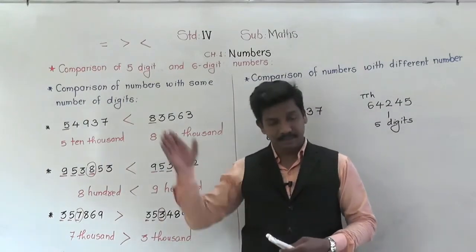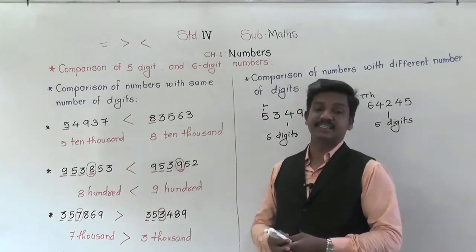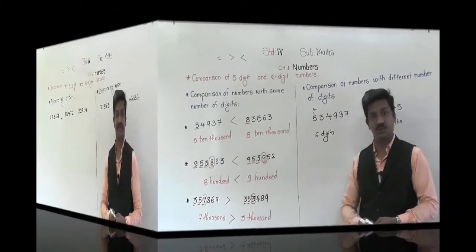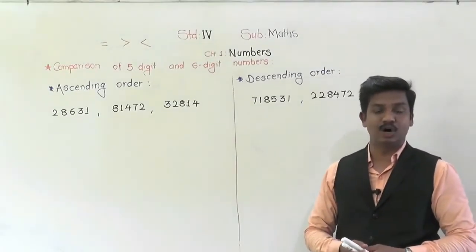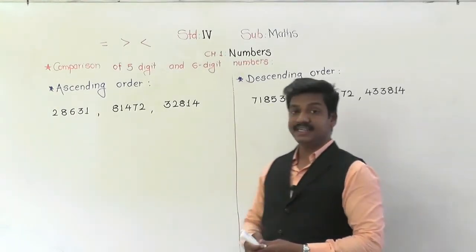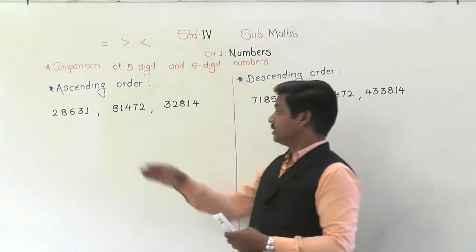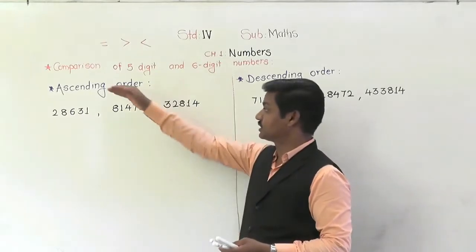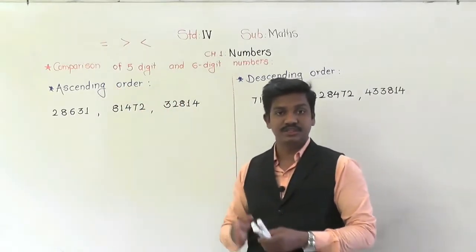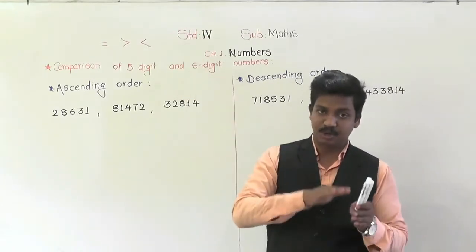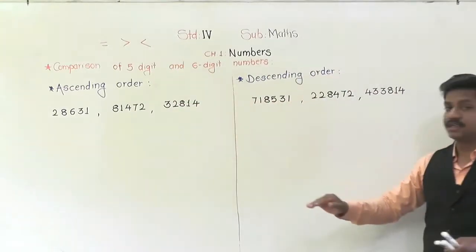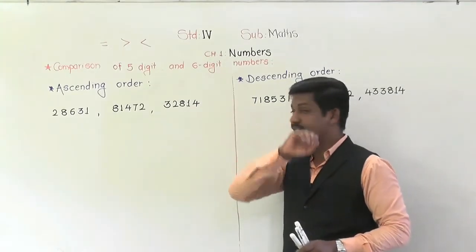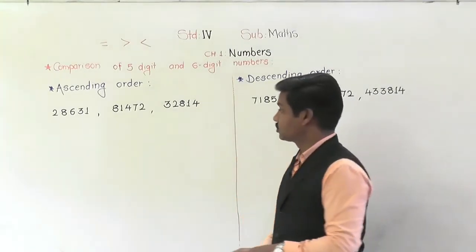After this, we are going to learn ascending and descending order of 5-digit and 6-digit numbers. Ascending and descending order is also a type of comparison, but here there are more than two numbers — three numbers or four numbers. We have to arrange them. Ascending order means arranging the given numbers in increasing order, from smallest to biggest.